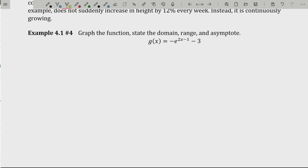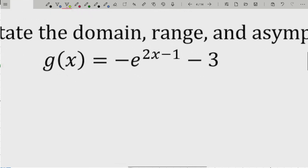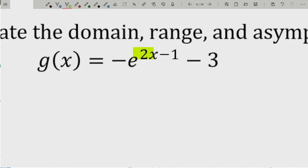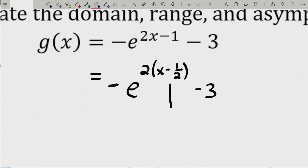Let's graph this natural-based exponential function and state the domain, range, and asymptote. If there's a coefficient in front of x in the exponent, factor it off both x and the constant. I'll rewrite g(x) = -e^(2x-1) - 3 as -e^(2(x - 1/2)) - 3. This showcases the shift: right 1/2 unit and down 3 units.